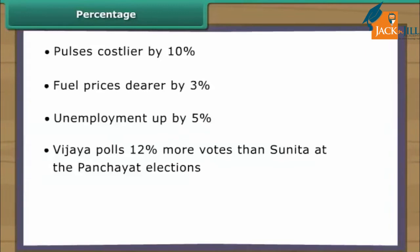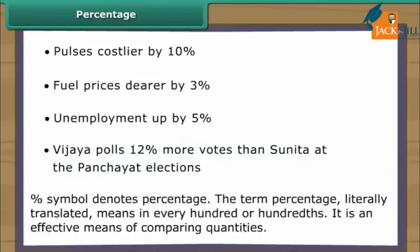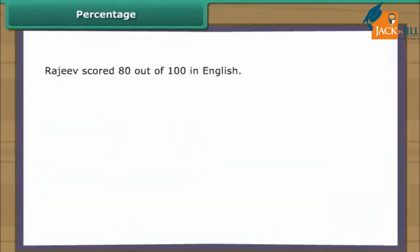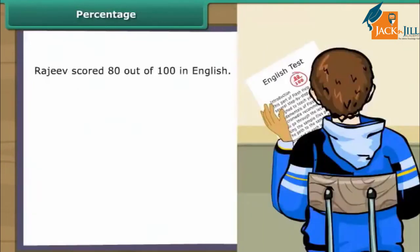One common element in all these headlines is that they all indicate comparison of quantities. Another element common in them is the use of the percentage symbol. The symbol denotes percentage. The term percentage literally means in every hundred or hundredth. It is a means of comparing quantities. Rajiv scored 80 out of 100 in English; his score can be expressed as a fraction of the total as 80/100.